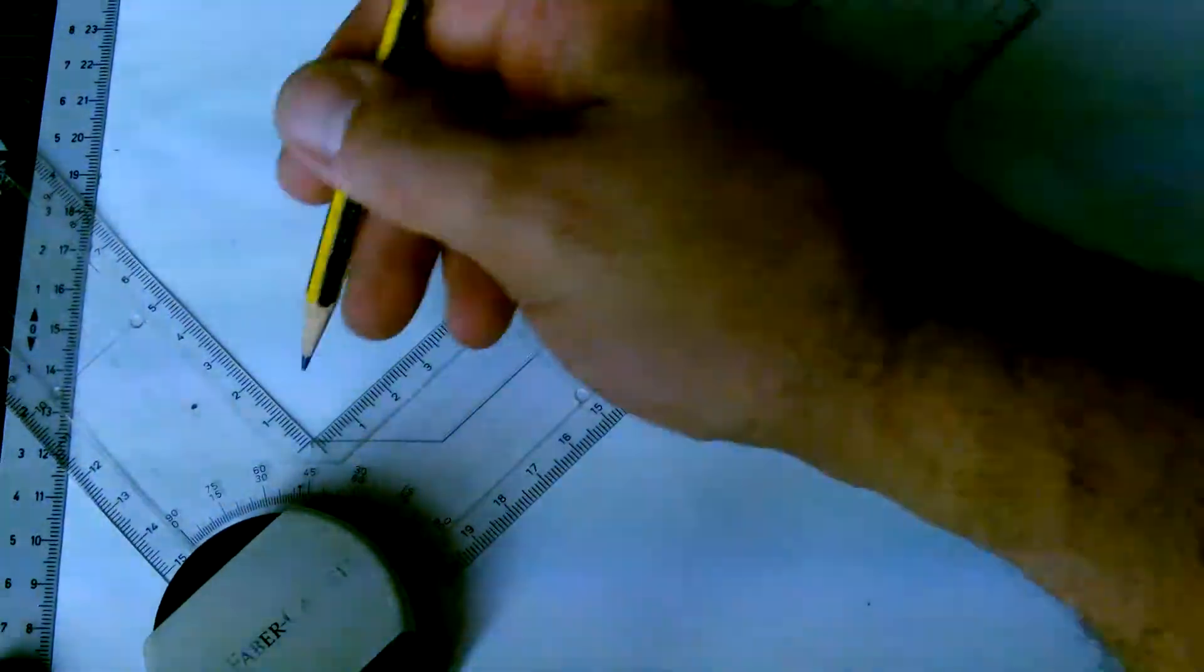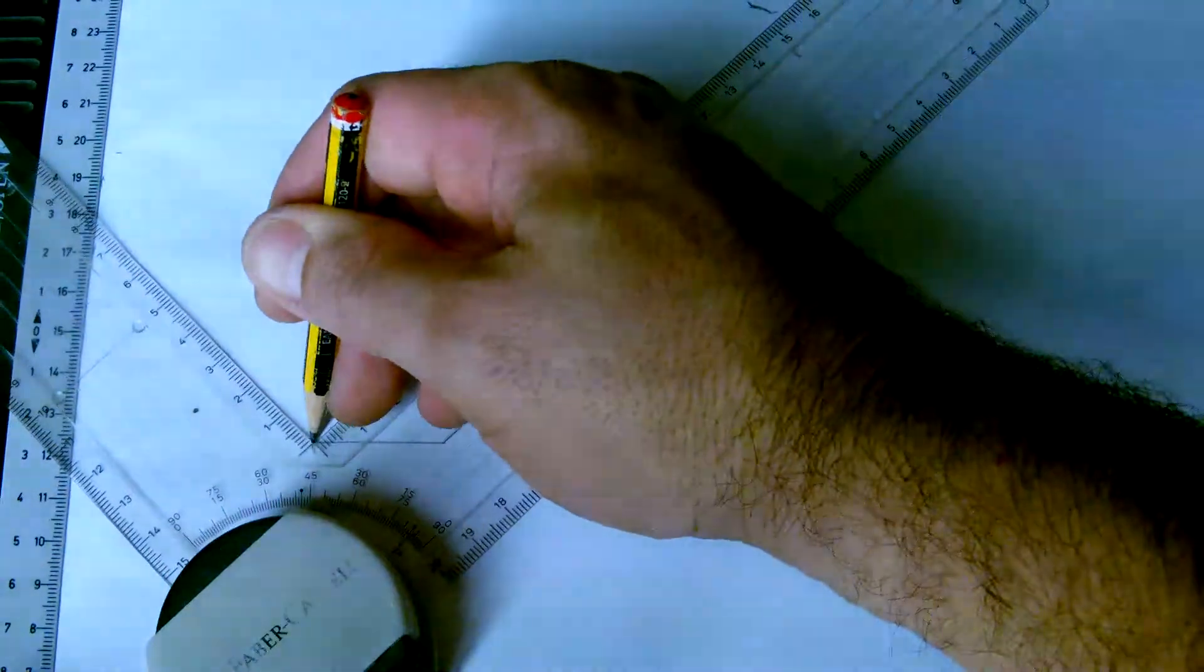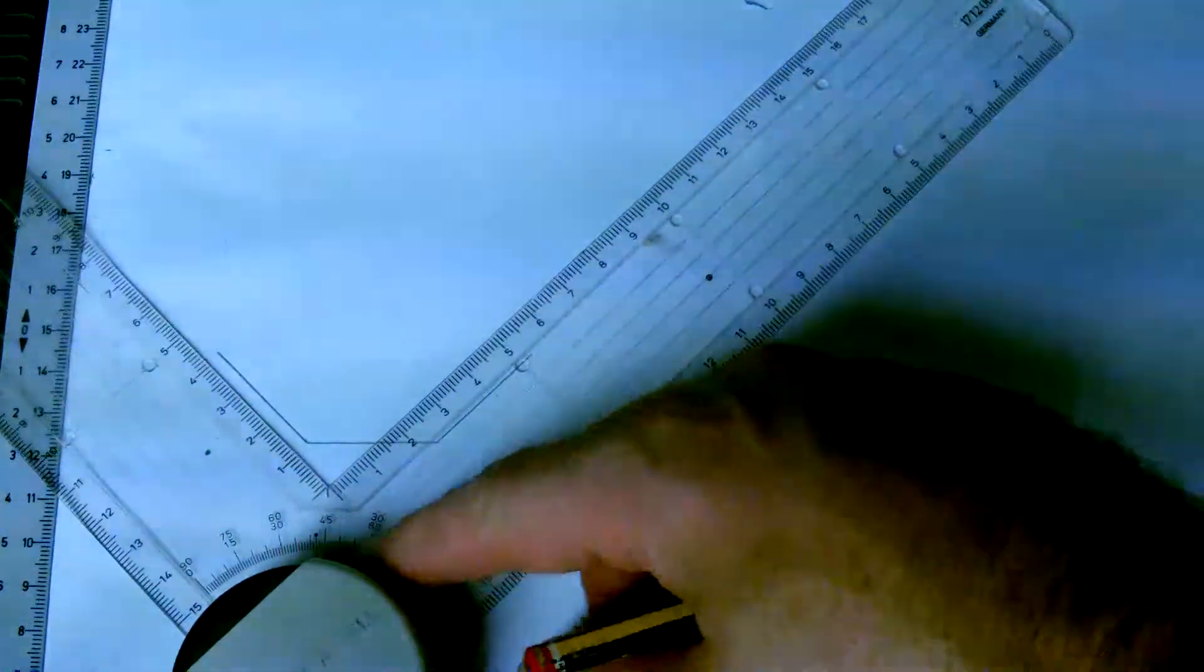I'm going to do the same on the other side. A 30 millimeter line going that way with 45 degrees. 360 divided by eight sides gives you a 45 degree exterior angle.